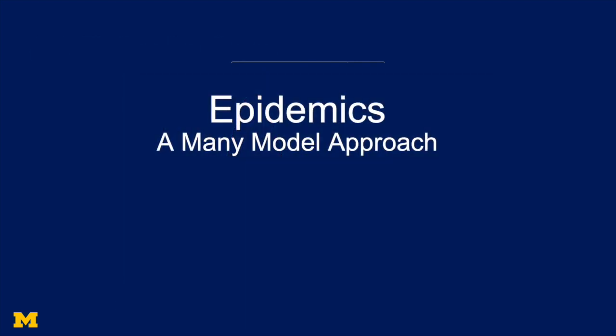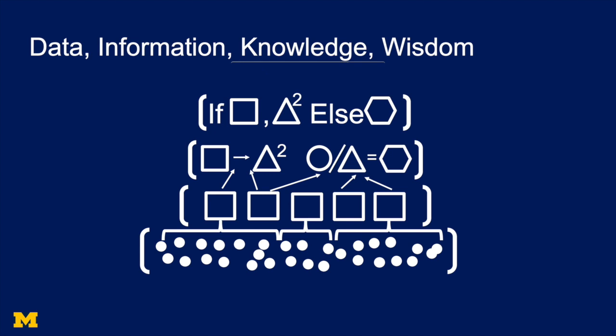Before we get there, I want to remind you that what we're doing here is a many model approach. This is just one model. Let's go back to the wisdom hierarchy. Remember, we had data and then we had information, putting that data in categories. Then we had knowledge, understanding why do we see the patterns that we see. Well, the top of the wisdom hierarchy is wisdom. And wisdom comes from having a bunch of models, from using multiple lenses to look at a problem.